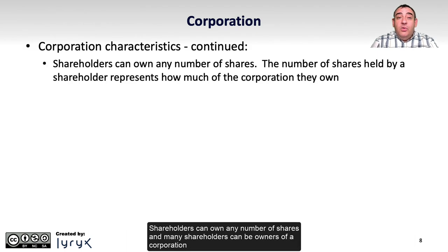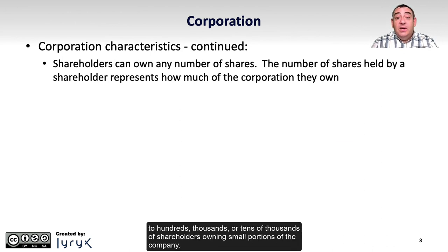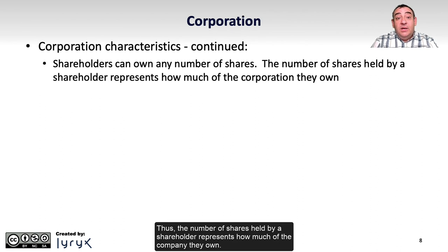Shareholders can own any number of shares, and many shareholders can be owners of a corporation, ranging from a single shareholder owning 100% of the company, to hundreds, thousands, or tens of thousands of shareholders owning small portions of the company. Thus, the number of shares held by a shareholder represents how much of the company they own.